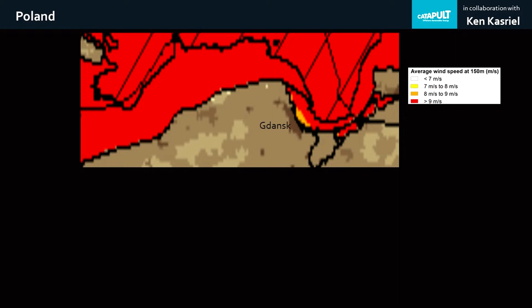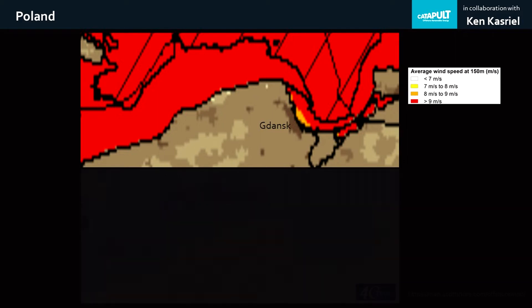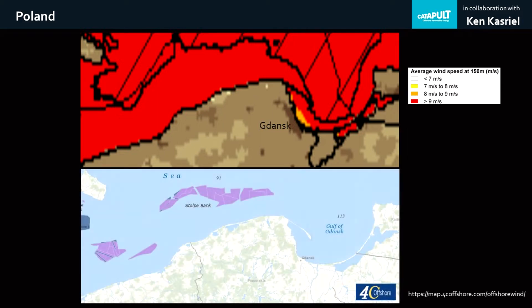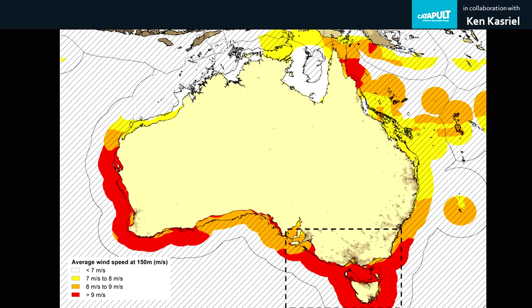What's really interesting is how well the criteria Gavin set for the map design explains, for the most part, where the industry and government are actually studying or planning offshore wind farms — for example, the colored areas in the bottom map — and also where these are under construction or even up and running.